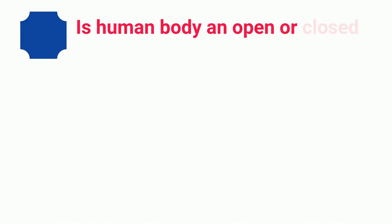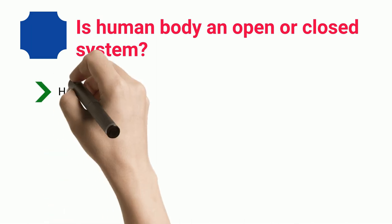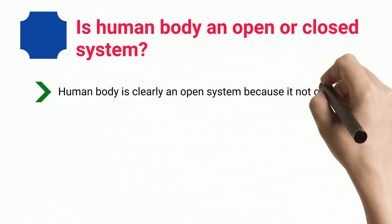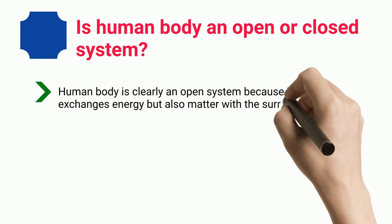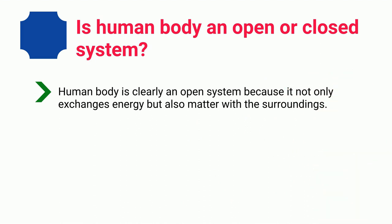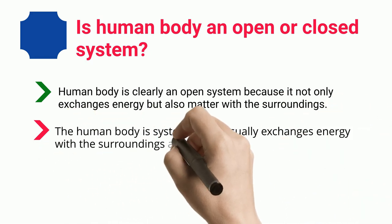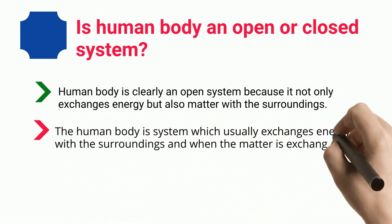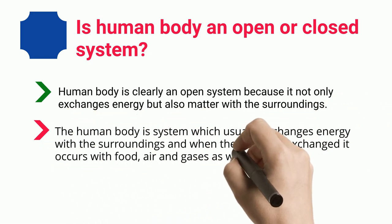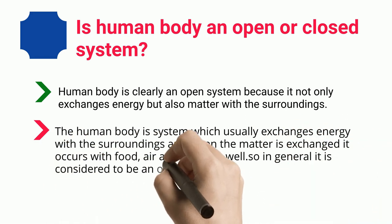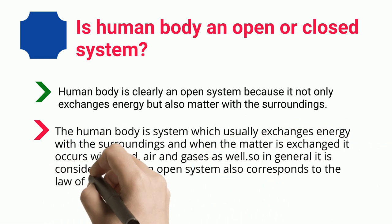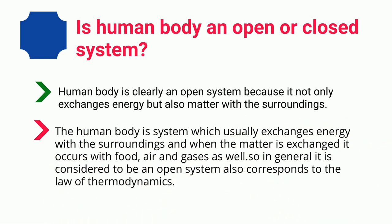Is the human body an open or closed system? The human body is clearly an open system because it not only exchanges energy but also matter with the surroundings. The human body exchanges energy with the surroundings, and matter is exchanged through food, air, and gases as well. In general, it is considered to be an open system, which also corresponds to the law of thermodynamics.